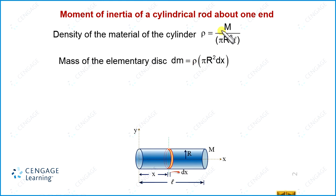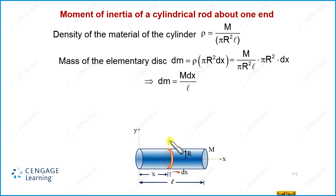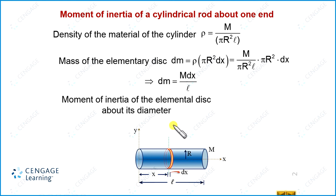We substitute the value of density, m divided by πr²l. We observe that πr² and πr² cancel, so the mass of the elemental disc equals m·dx divided by l. The moment of inertia of this elemental disc about the x-axis is mr²/2, and about its diametrical axis is mr²/4. So dI equals dm·r²/4.